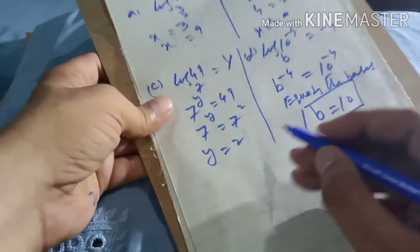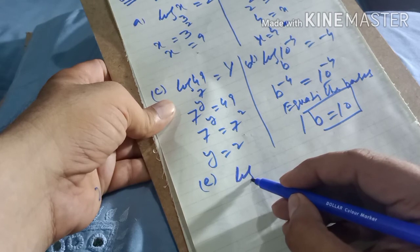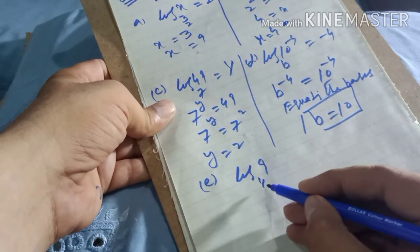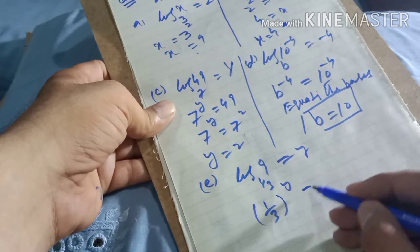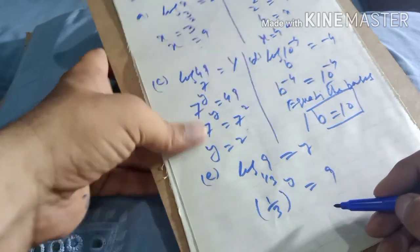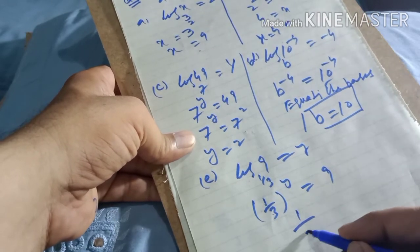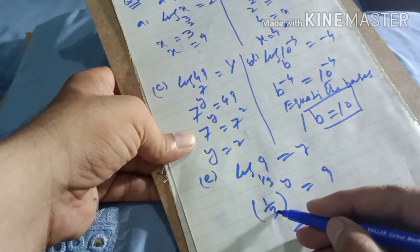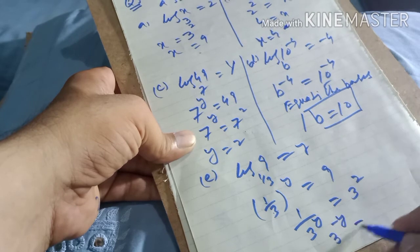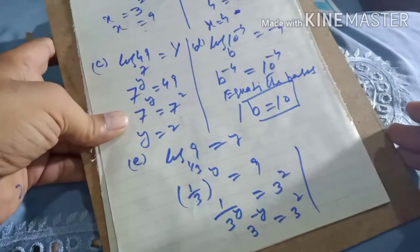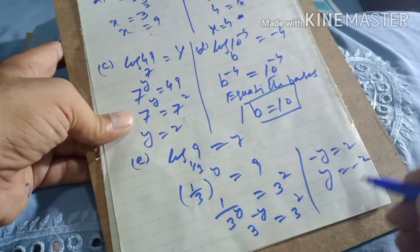Part e: log_(1/3)(9) = y. So (1/3)^y = 9. Writing 1/3 as 3^(−1): 3^(−y) = 9 = 3². Since the bases are the same, equating powers: −y = 2, so y = −2.